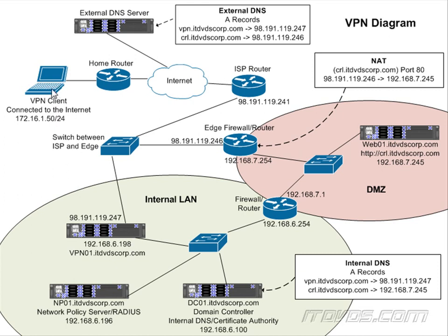Depending on how our VPN server is configured, it might go through to our VPN server and then back out the VPN server's external NIC, hit google.com, come back, and then go back through our VPN server to our VPN client. This may or may not be what we want. An advantage of doing this is we have the ability to track what our clients are doing on the internet even when they're VPNed in, because all traffic passes through our internal network and we can use proxy servers to track that traffic.